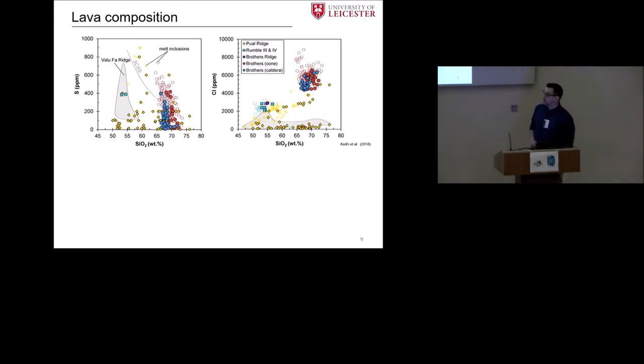For this purpose, we analyzed melt inclusions. You can see here sulfur and chlorine against silica. Symbology is the same as before, but we added now melt inclusion data. Open symbols are melt inclusions, solid symbols is the glass data. The red open circles are melt inclusions for the brothers cone data. What we can see here is that melt inclusions are higher in sulfur than the glass data. This may suggest that we have degassing of sulfur. We also calculated then here the sulfur concentration at sulfur saturation, it works. We see that we reach sulfide saturation.